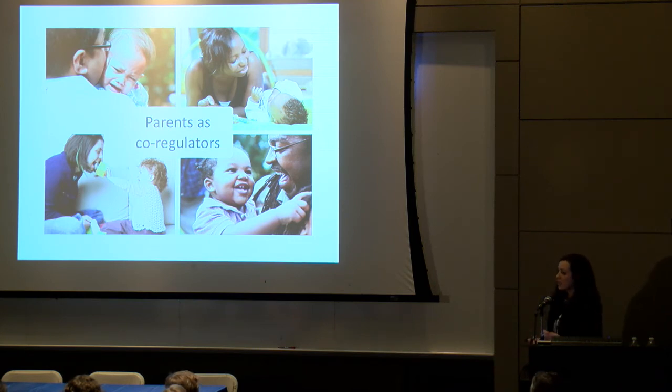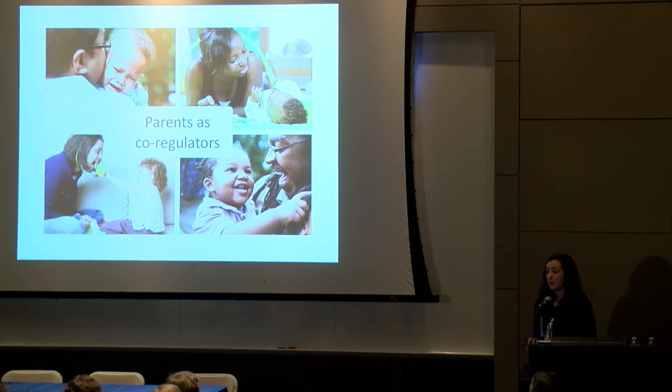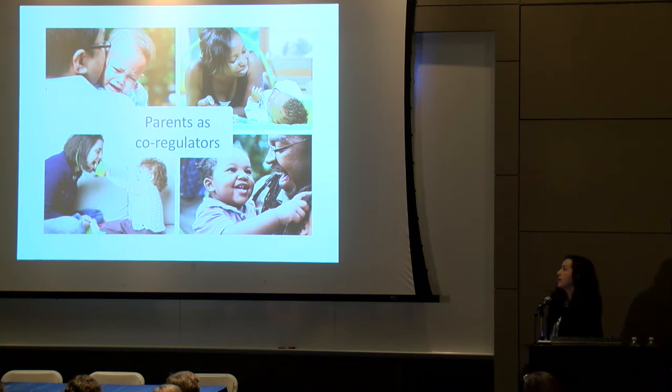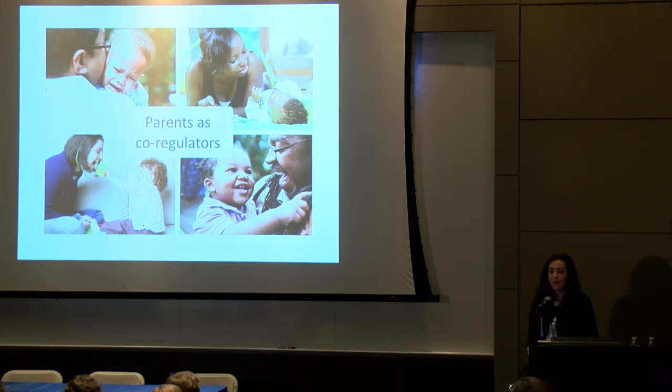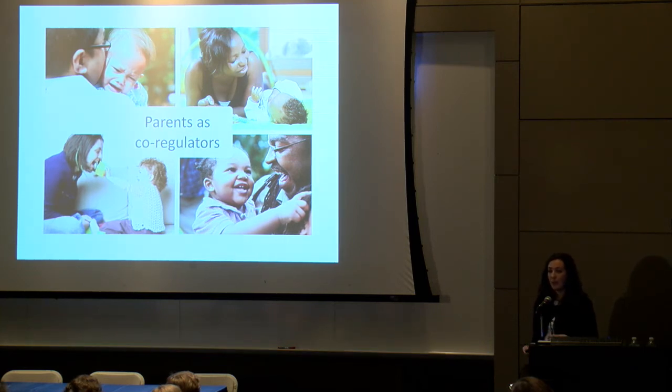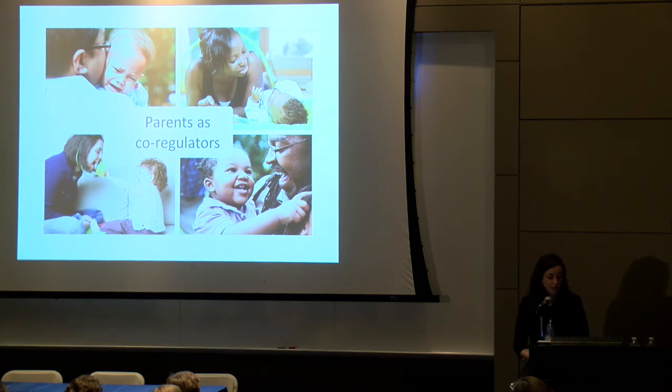The parent-child relationship, especially during infancy, is so central to children developing the ability to regulate their emotions when they experience distress or anger, as well as their ability to regulate their behavior and their ability to regulate on a physiological level. Parents are really the source of all aspects of regulation really early in infancy.